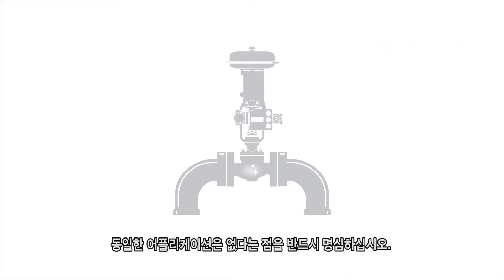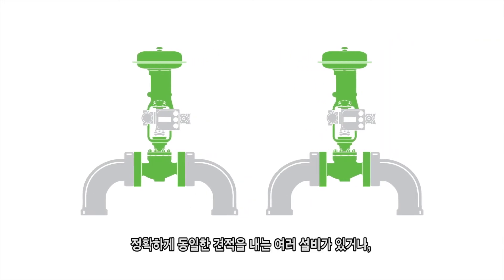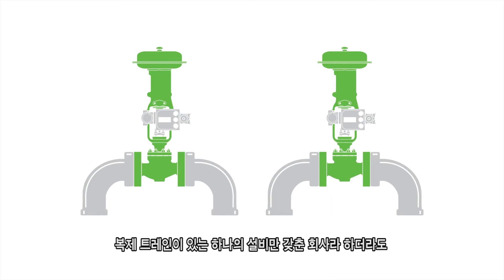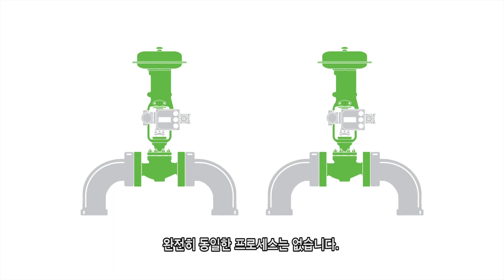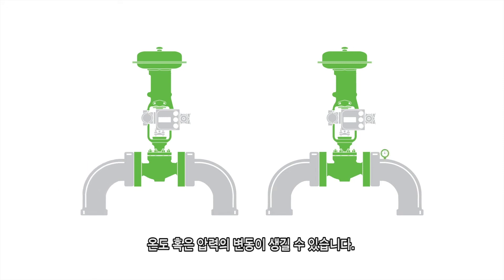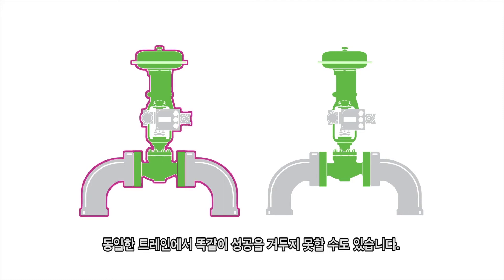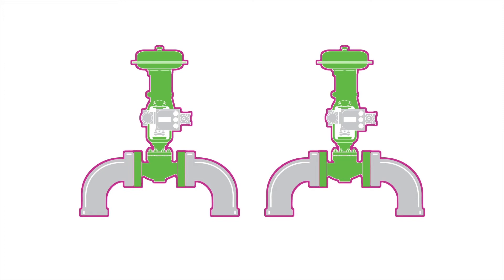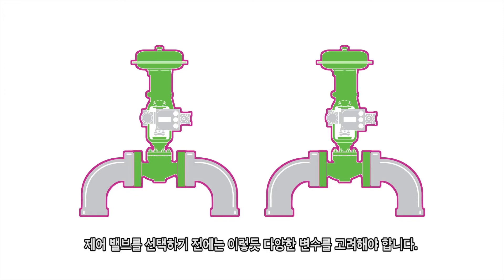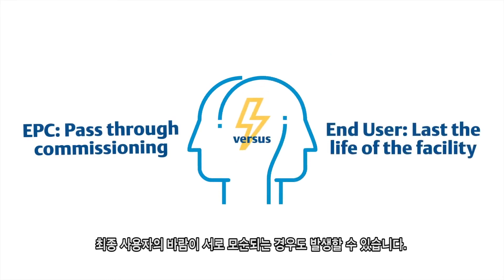Other things to keep in mind: no two applications are identical. Even a company that has multiple facilities that are exactly the same, or just one facility with duplicate trains — no two processes are completely identical. There's going to be something different. Maybe the piping is slightly skewed, or maybe you have fluctuations in temperature and pressure. Even though one valve installation is successful, that success may not be duplicated in an identical train. All these things need to be considered, and unfortunately, the desires of the engineering piping contractor and the end user will sometimes be contradictory.